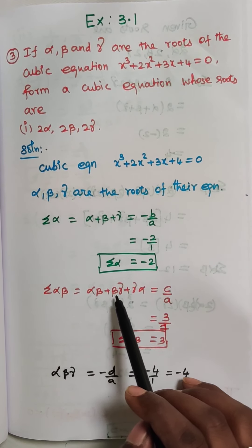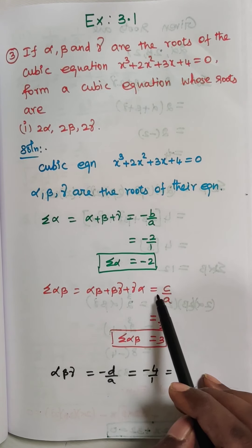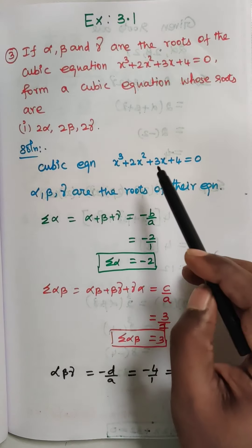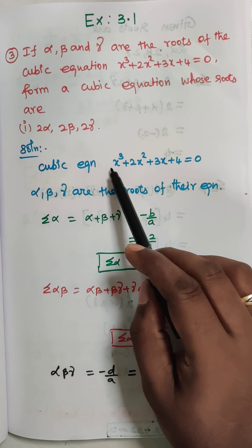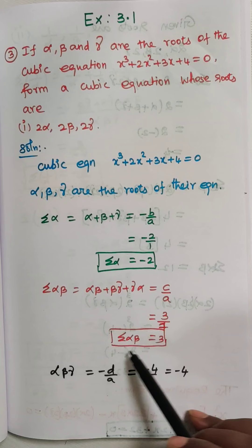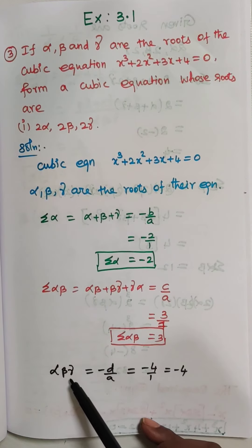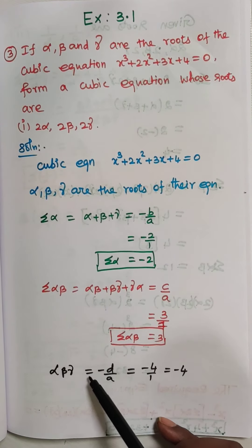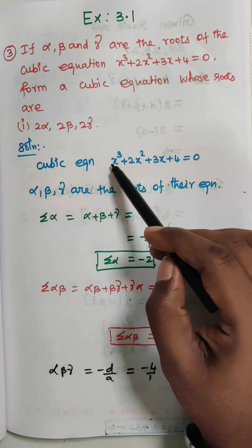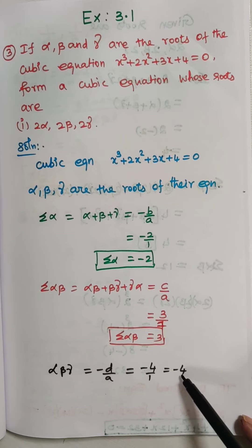Next, summation alpha·beta, that is alpha·beta + beta·gamma + gamma·alpha, equals the formula c/a. c value is 3, a value is 1, so 3 by 1 equals 3. Next, alpha·beta·gamma equals the formula -d/a. d value is 4, a value is 1, so minus 4 by 1equals minus 4.